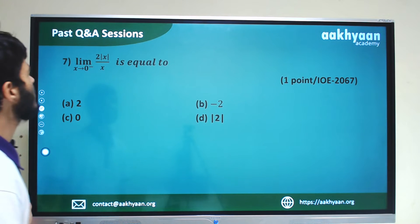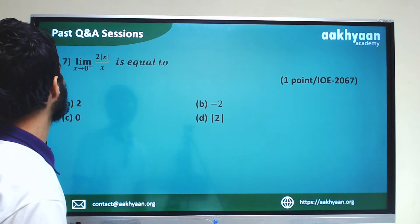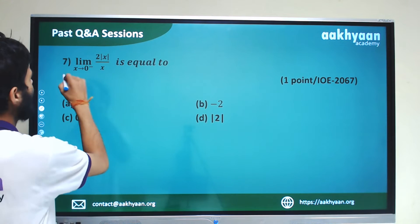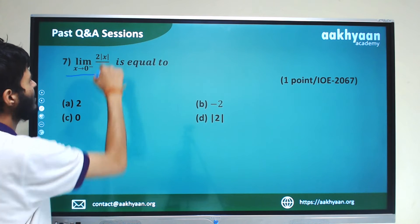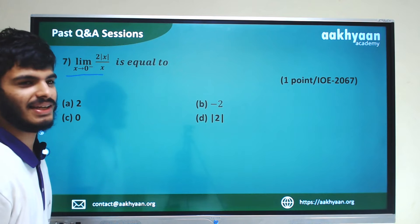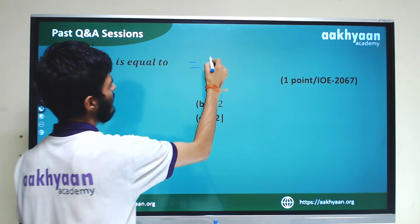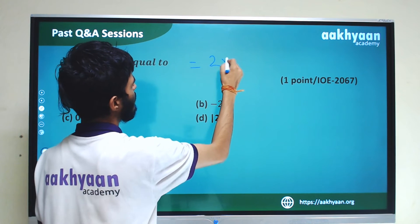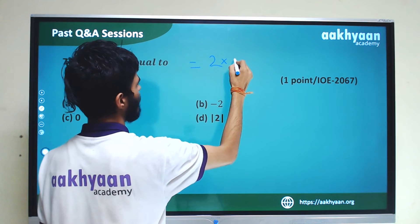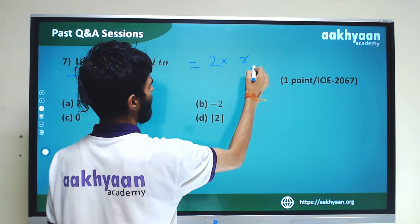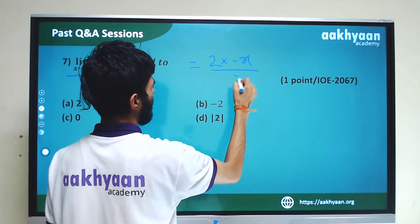Let's go to the next question. We are given limit x tends to 0 of (2x minus y). Simplifying, this is 2 into x minus 2, then minus x by x.